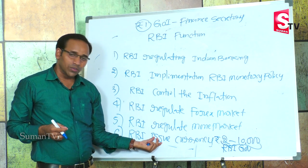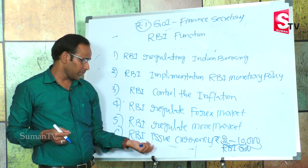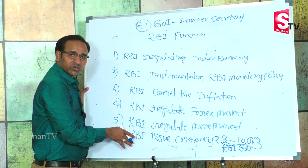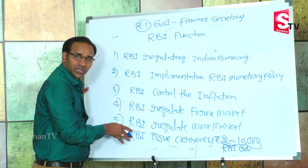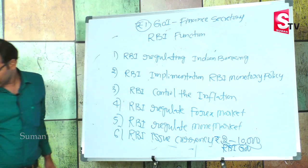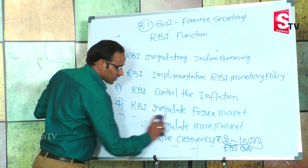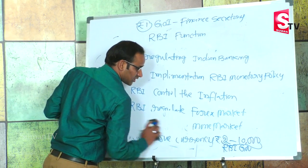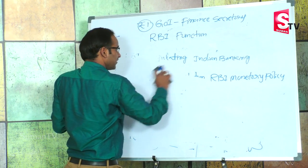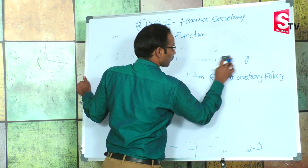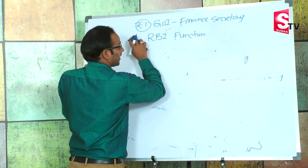The RBI issues different types of currency notes. We are expecting a question on the currency printing places in India. There are four currency printing places working in India: Nasik, Salboni, Dewas, and Mysore.